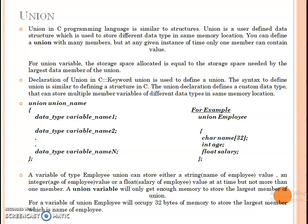We can define different data type variables in the union. In a structure, each and every member has a different memory location. But in a union, we can define any number of variables sharing the same memory location. The final memory size for a particular union is equal to the size of its largest member.